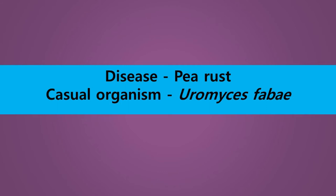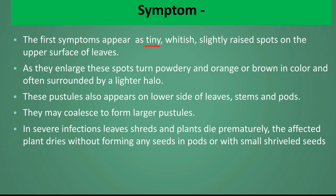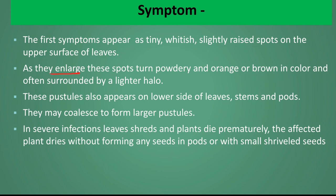Rust disease of Pea. Pea rust is caused by Uromyces pisi. Symptom: The first symptom appears as tiny, whitish, slightly raised spots on the upper surface of the leaf. This slight raising occurs because the pathogen multiplies inside the plant cells and produces so many spores that the upper surface becomes raised. As the spots enlarge, they turn powdery and orange or brown in color, often surrounded by a light yellow halo.